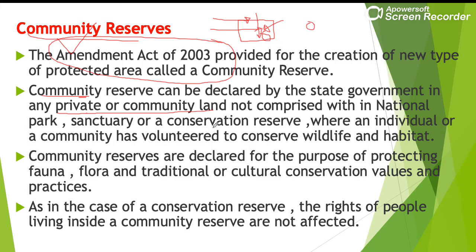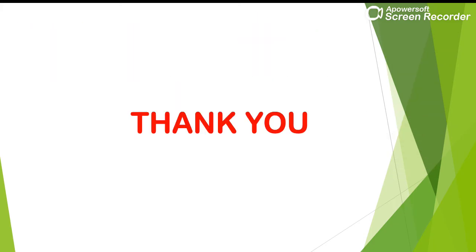If a community or private landowners voluntarily want legal protection for their land's wildlife, fauna, flora, geological, ecological, and natural significance, they can approach the state government. The state government can then declare that area a community reserve. The key difference between conservation and community reserves: conservation reserves are state-owned land adjacent to national parks or migration corridors, while community reserves are private or community land where people voluntarily seek protection. In both cases, the rights of people are not affected, unlike in national parks and wildlife sanctuaries. I hope the differences between community reserves, conservation reserves, national parks and wildlife sanctuaries are clear. Thank you so much.